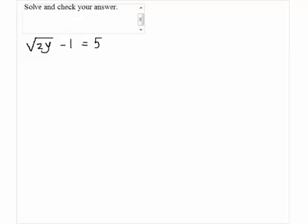Solve and check your answer. Square root of 2y minus 1 equals 5.